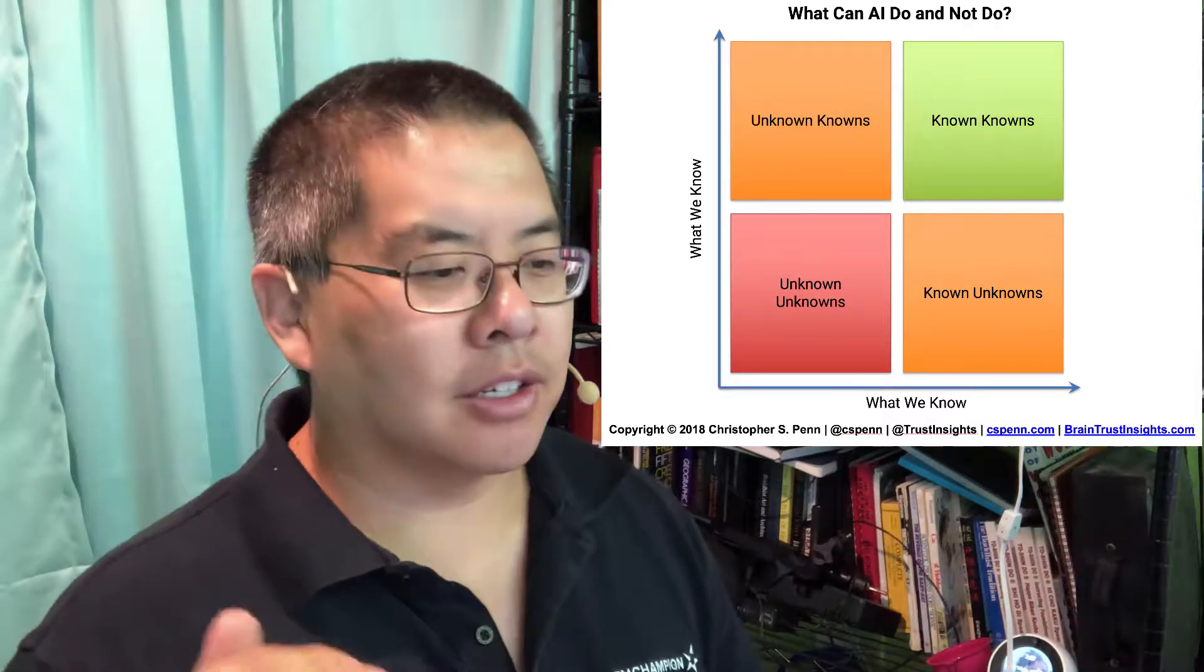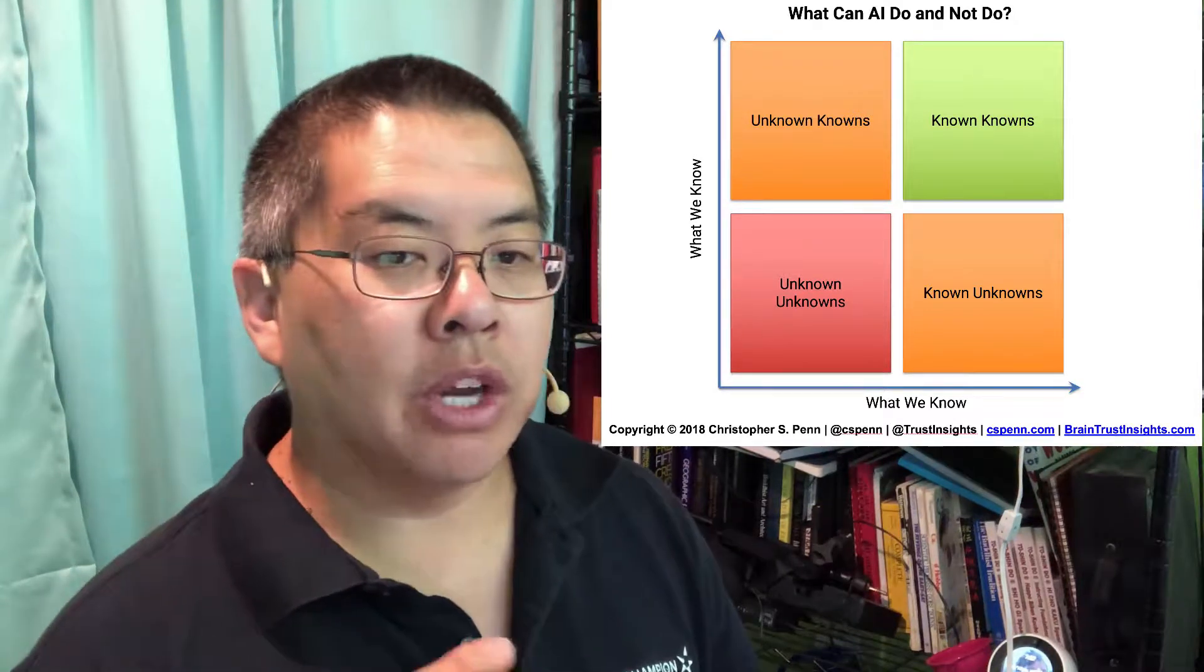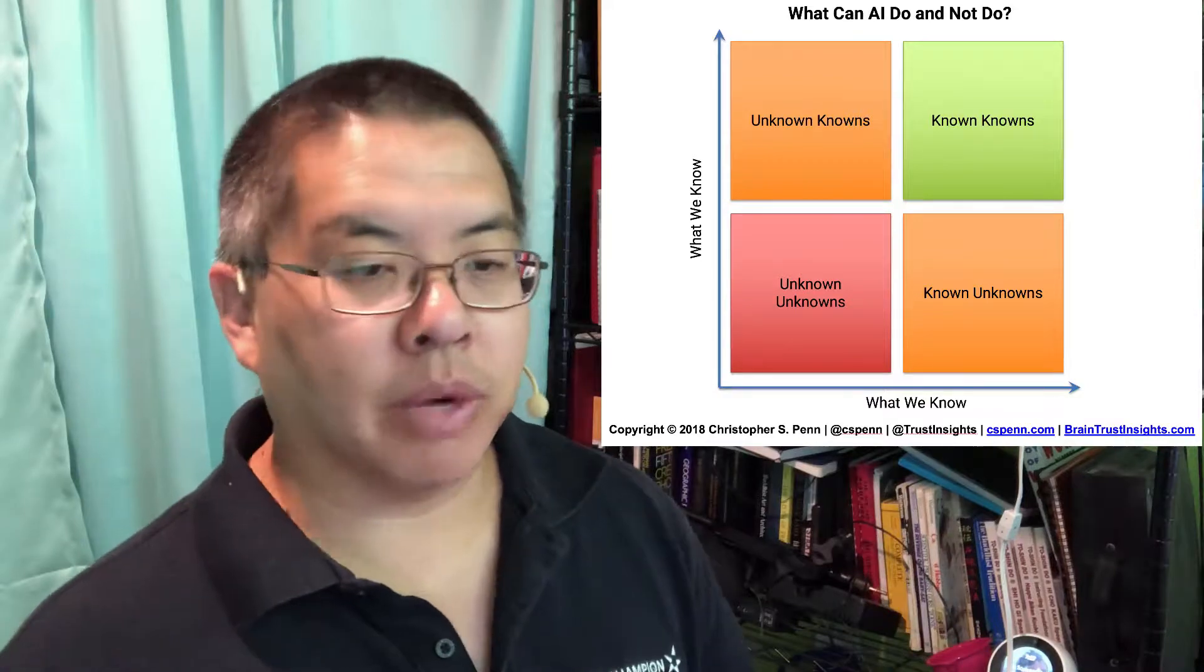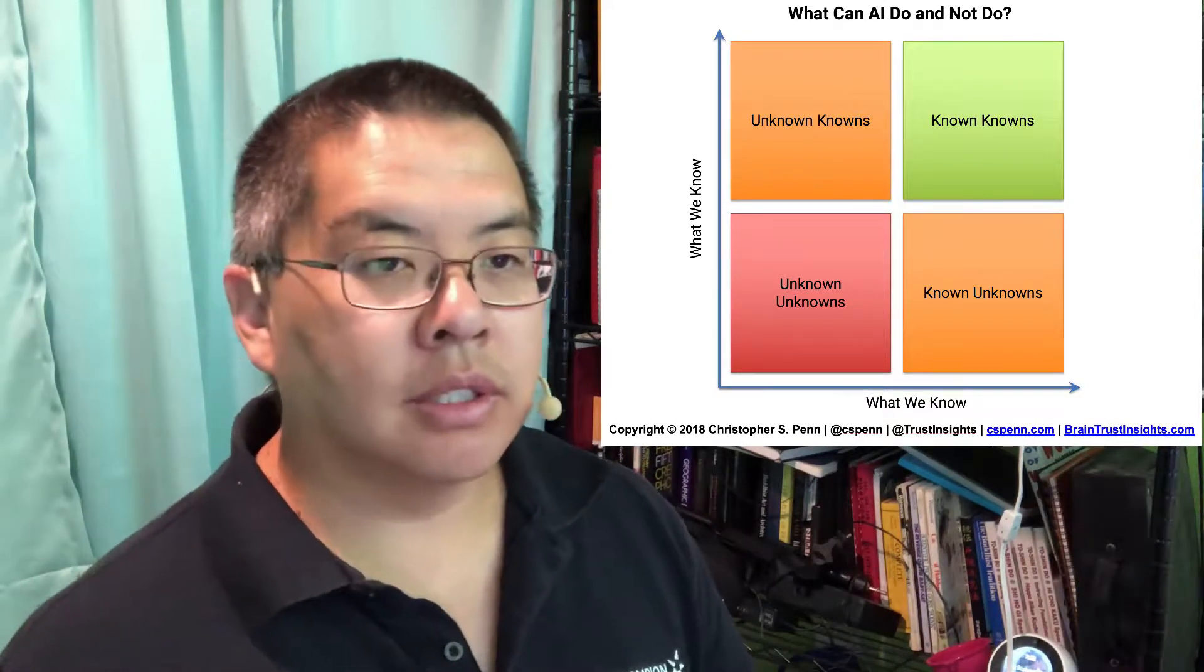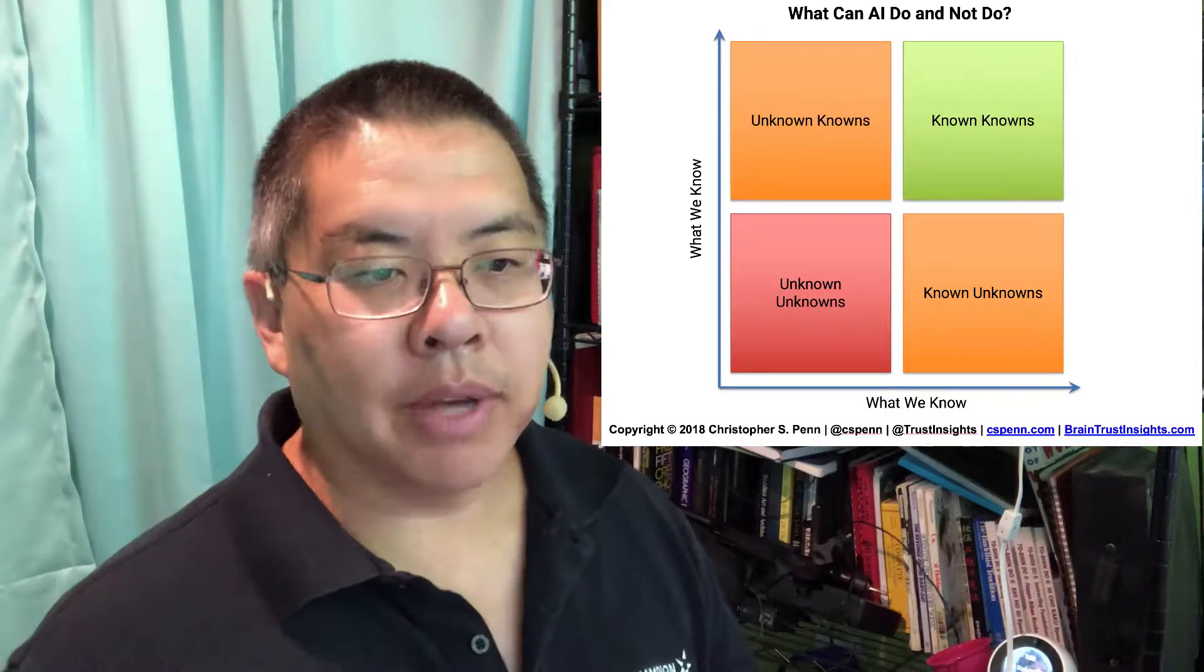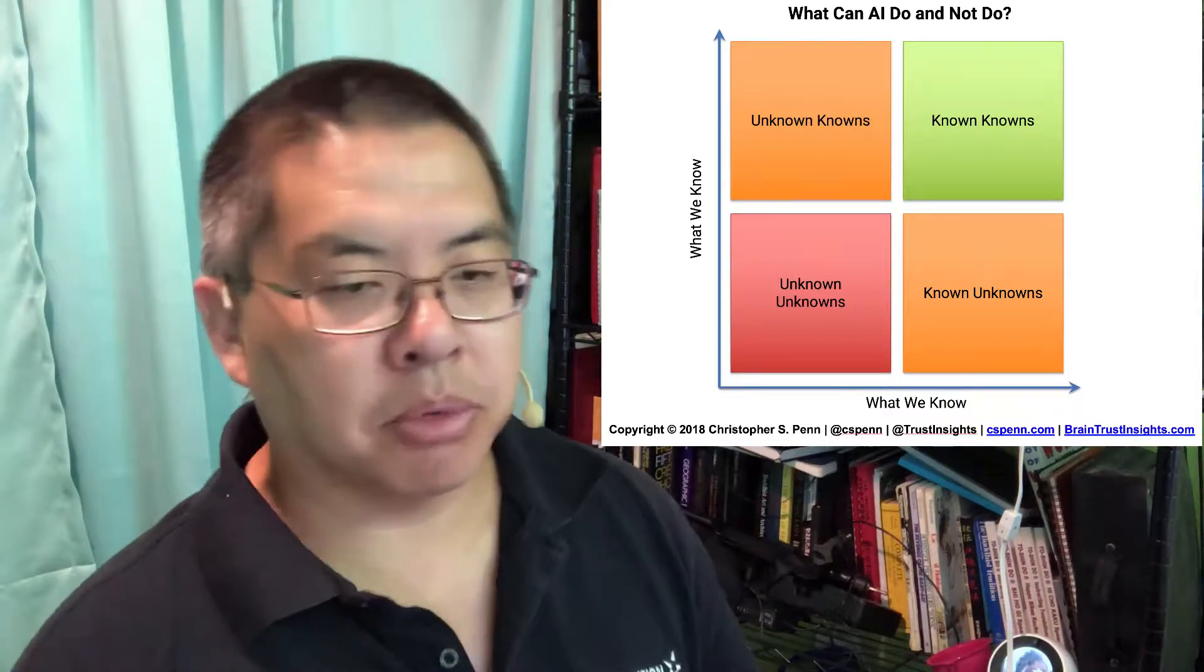Known knowns are things that we know how to automate and we know how to offload and we know how to validate the answer is correct. It's a great candidate for any kind of problem where we know what the answer is, we know how to get the answer, we have the code or the tools or the data to do so. Let AI do those kinds of problems.